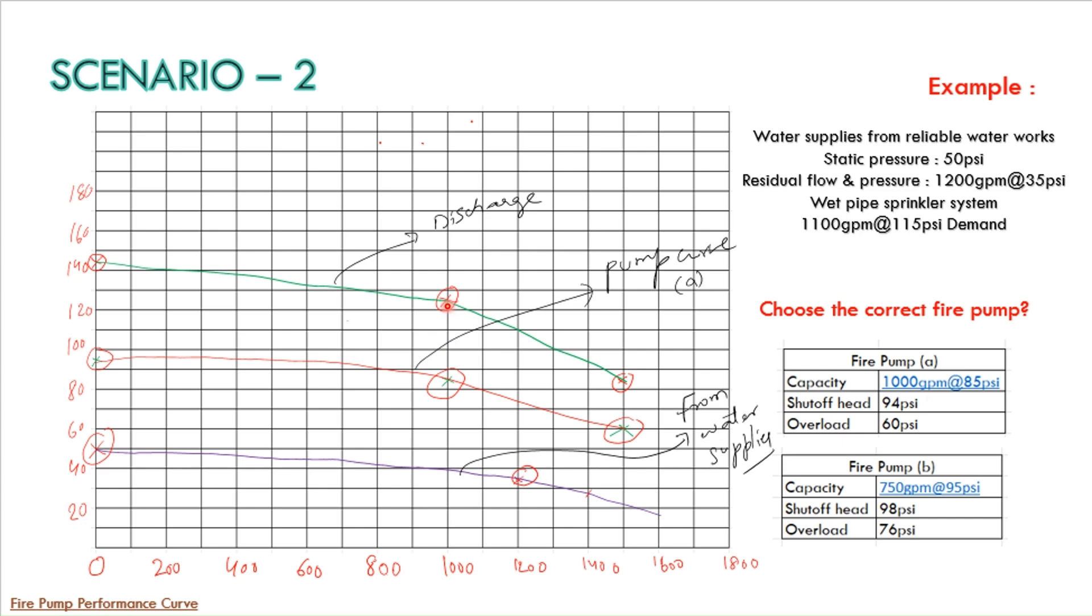Apart from that at 1500 GPM also you can see here you have 20 or 22 PSI plus you need to add this 60 PSI. So it will be around 82 PSI. So we have joined these three points.